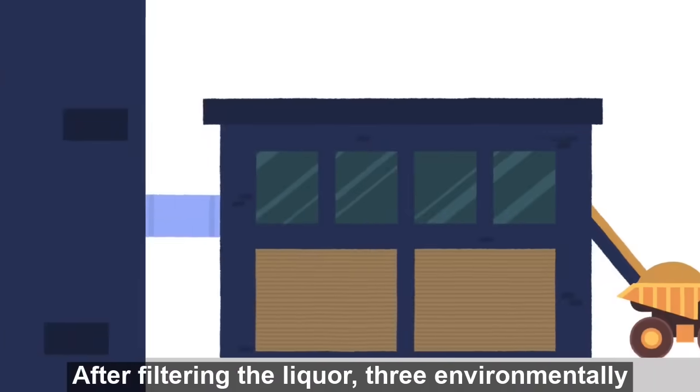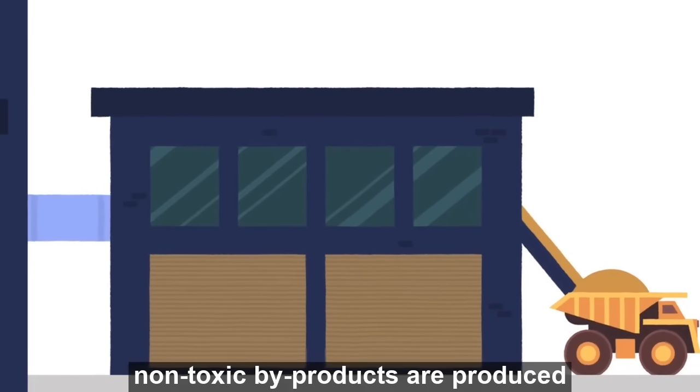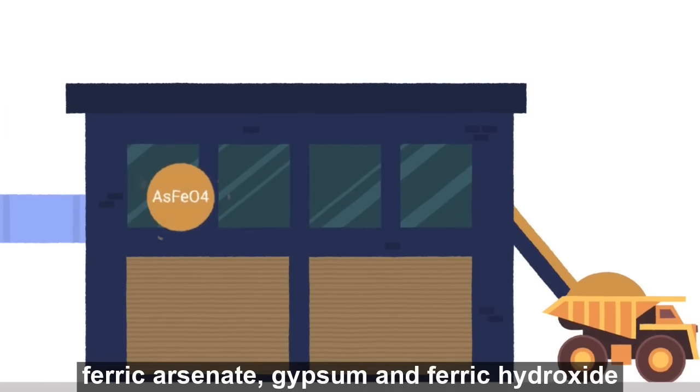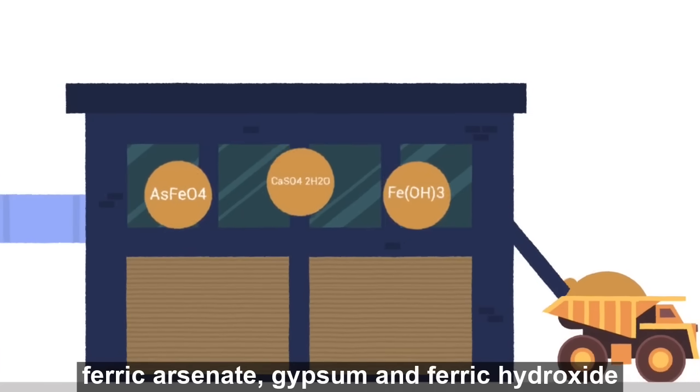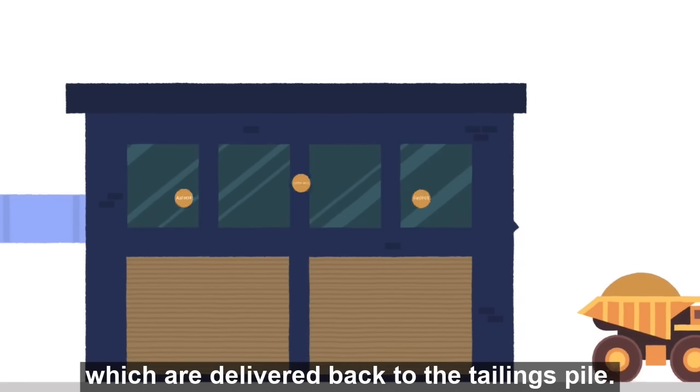After filtering the liquor three environmentally non-toxic byproducts are produced: ferric arsenate, gypsum, and ferric hydroxide, which are delivered back to the tailings pile.